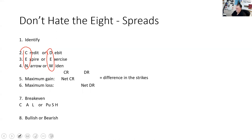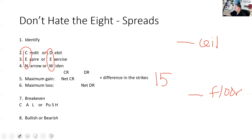The fifth and sixth of the eight things: determine the maximum gain and maximum loss. The gain and loss always equals the difference in the strikes — there's a floor and a ceiling, and there's only those points to be made or lost. If we get the credit, we know the balance is loss. If we have the debit, we know the balance is gain. I would warn you: the less you understand options, the more memory work is going to be involved.